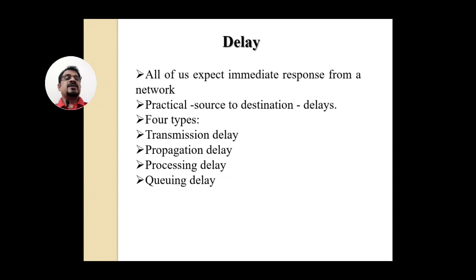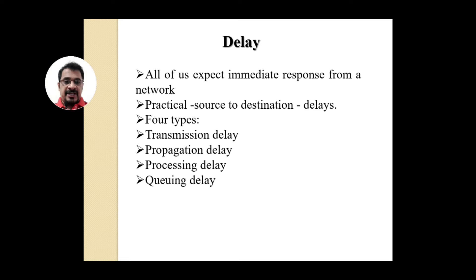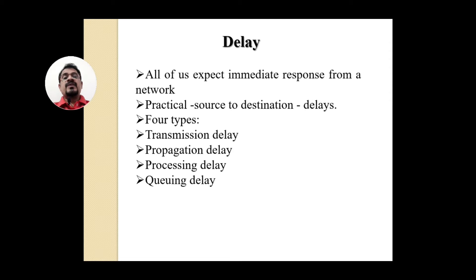The first type is transmission delay — the overall delay to transmit data from one end to another. The second is propagation delay. When a packet travels from one node to another, from one network to another, it passes through many links.